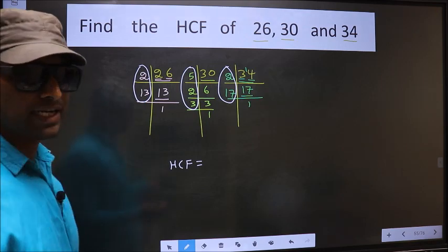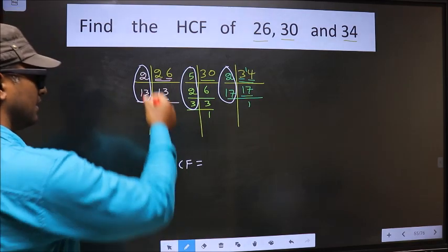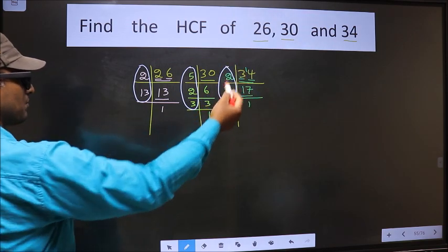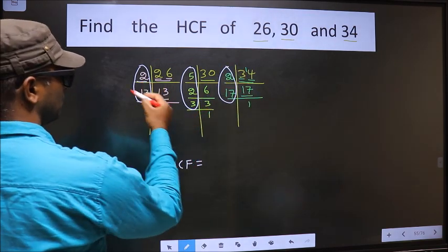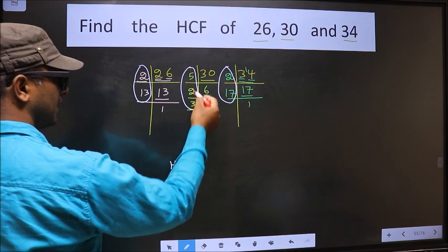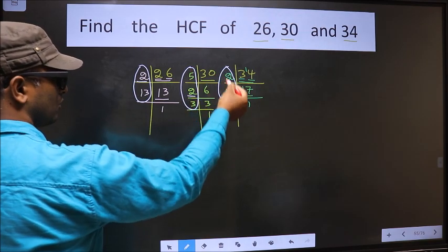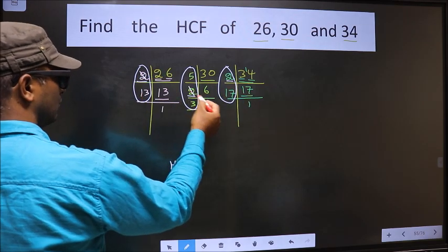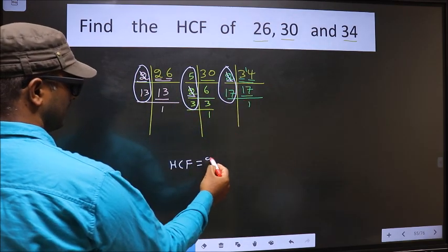So now let us find the numbers which are present here, and here, and also here. Starting with the number 2. Do we have 2 here? Yes. Go to the next place. Do we have 2 here? Yes. So you cut 2 right here.